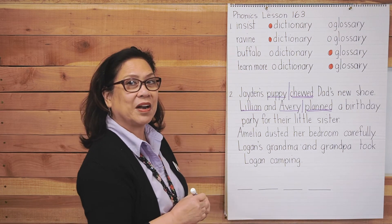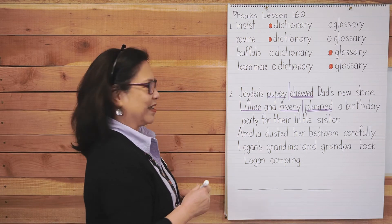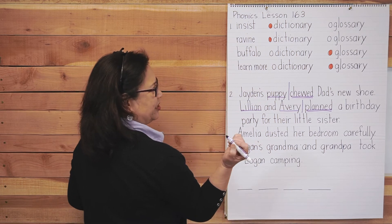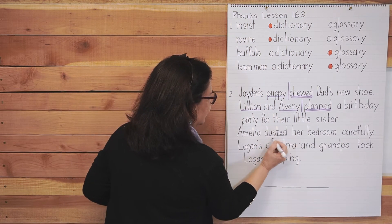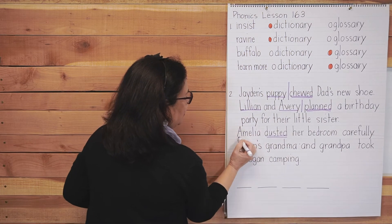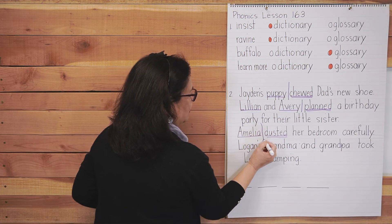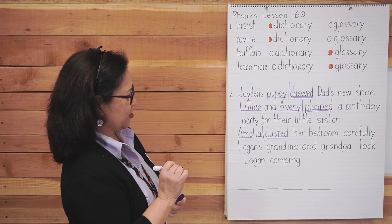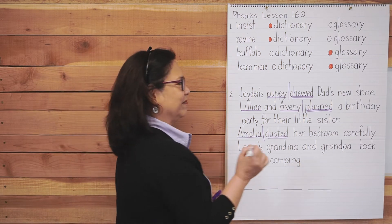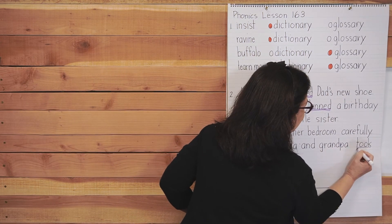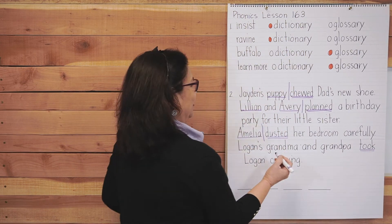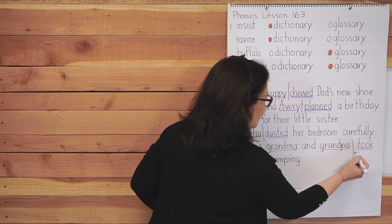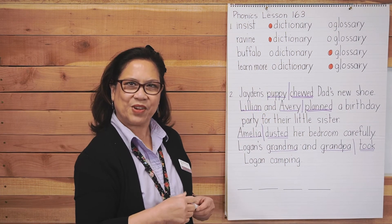Okay, I hope you marked your sentences. Let's see if you got them correct. Amelia dusted her bedroom carefully. The verb is 'dusted.' Who's doing the dusting? Amelia. Divide the sentence. Okay. Logan's grandma and grandpa took Logan camping. What is the action word? 'Took.' Who's doing it? Grandma and grandpa. Then divide it. All right, I hope you got those correct.